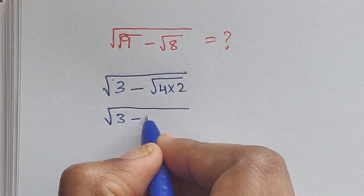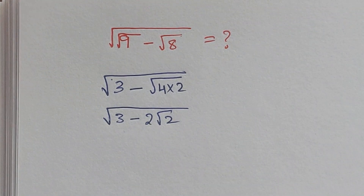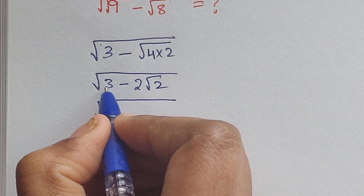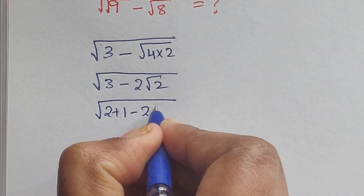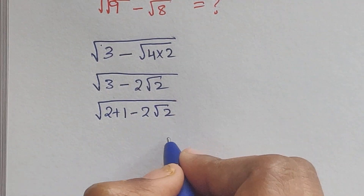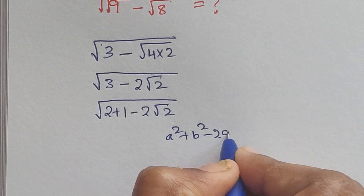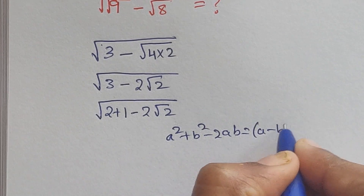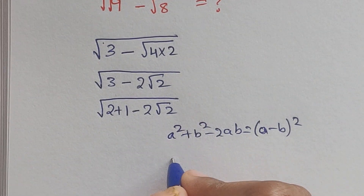Square root of 4 is 2, so we get square root of (3 minus 2 square root of 2). Now 3 can be written as 2 plus 1, so we have square root of (2 plus 1 minus 2 square root of 2). We recall the identity: a squared plus b squared minus 2ab equals (a minus b) squared.